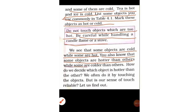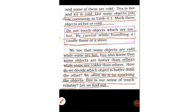Some objects are hotter than others and some are colder than others. How do we decide which object is hotter than another? We often do it by touching the object. If we touch a pot and it is hot, we know the pot is hot. But is our sense of touch reliable? Let us find out whether our sense of touch is doing proper work or not.